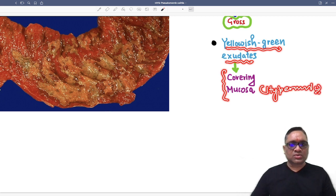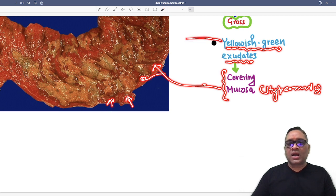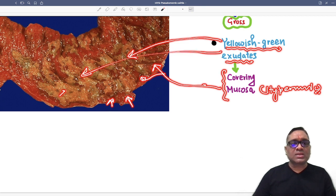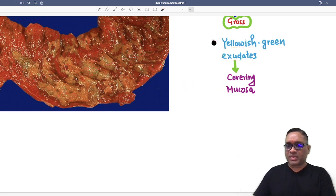It can be hyperemic also. As you can see here, there is a hyperemic mucosa. They are little reddish or fiery red-like appearance, and they are covered by the yellow-green exudates. Now, you can see all these are yellow-green exudates covering the red color hyperemic mucosa. So that is the pseudomembranous colitis.